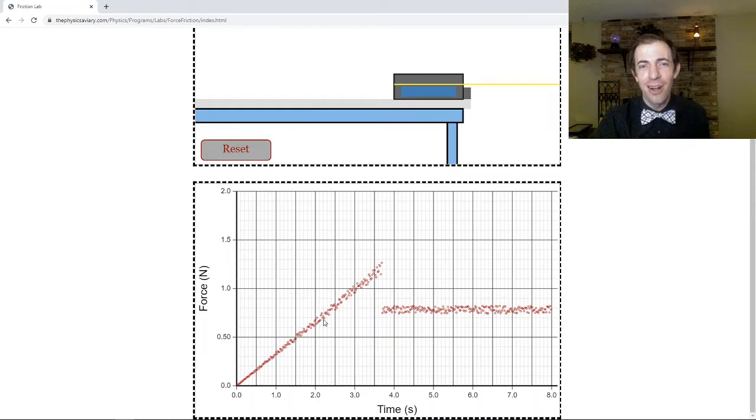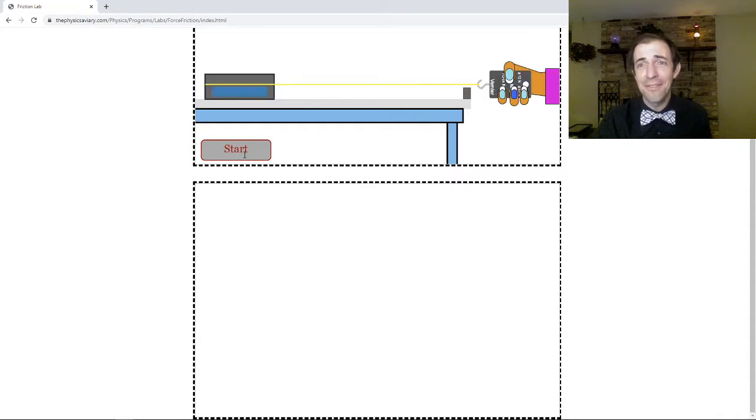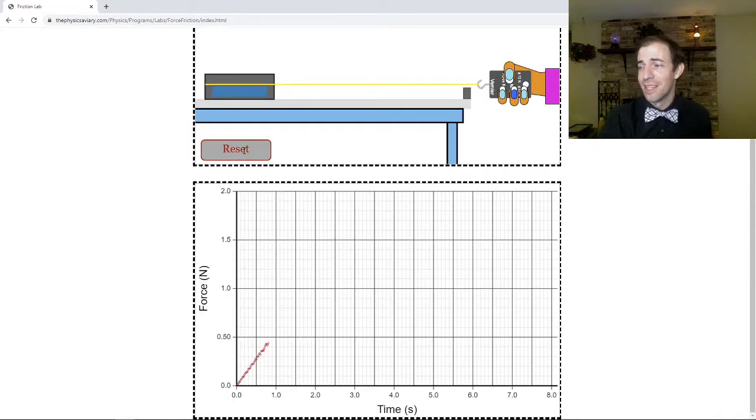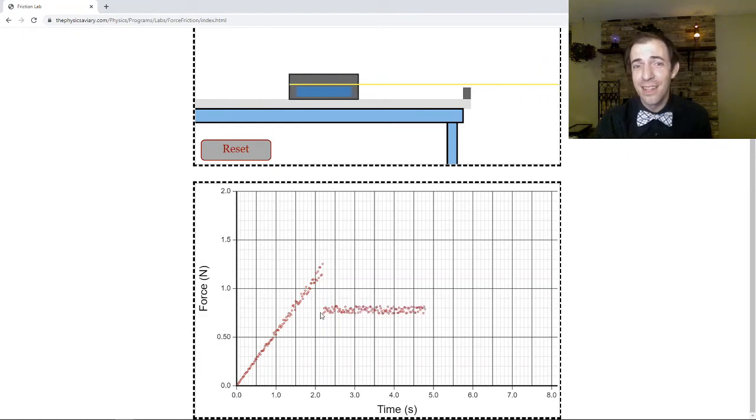If I start the simulation and plot the force, I'm pulling harder and harder until finally it starts moving. Notice what happened once it started moving in this graph. We had to pull harder to get it to move, but once it started moving this force dropped down dramatically. This is representing the static friction and this is representing the kinetic friction.